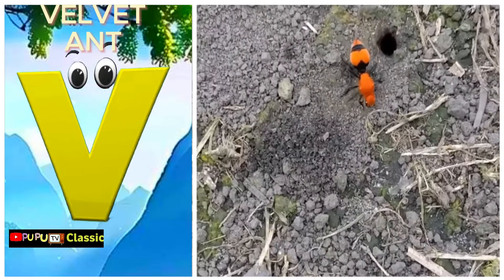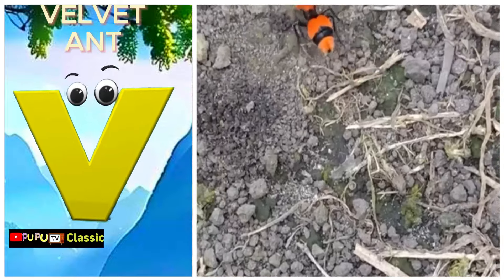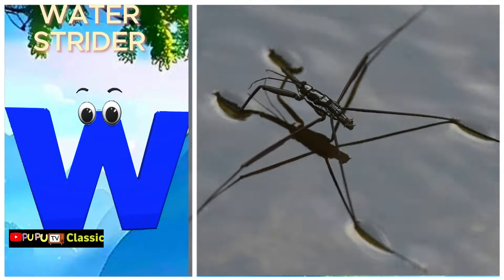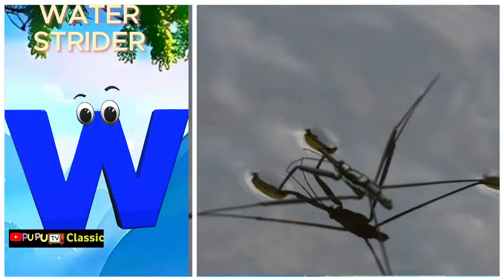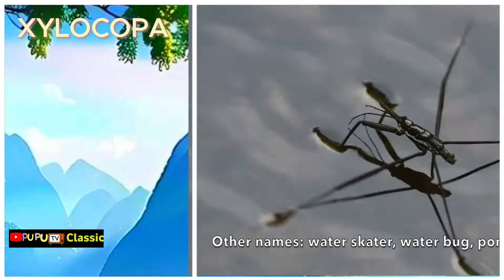V is for Velvet Ant. V. Velvet Ant. W is for Water Strider. W. Water Strider.